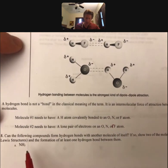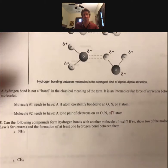And then the question here says, can the following compounds form hydrogen bonds with another molecule of itself? If so, show two of the molecules with their Lewis structures and the formation of at least one hydrogen bond between them. Many of these will be able to form more than one, but you only have to show one.